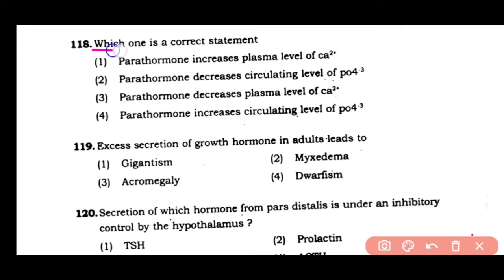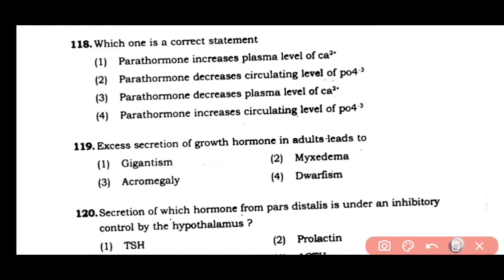Question number 118: Which one is a correct statement? (1) Parathormone increases the plasma level of calcium. (2) Parathormone decreases the circulating level of phosphate. (3) Parathormone decreases the plasma level of calcium. (4) Parathormone increases the circulating level of phosphate. The correct answer is option 1. Parathormone increases the plasma level of calcium. It is antagonistic to calcitonin hormone, which decreases the blood calcium level.